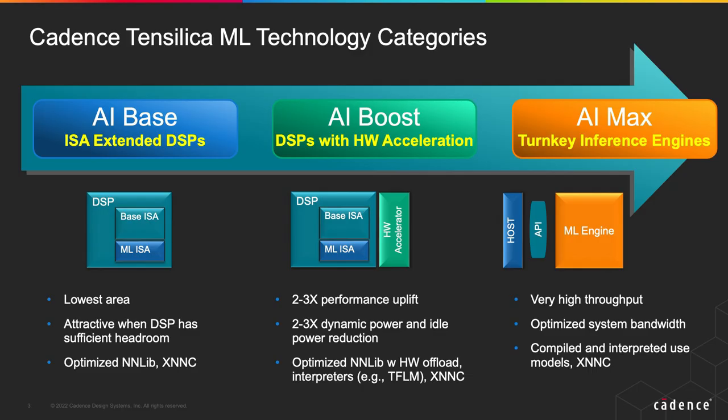For example, TFLM or XNNC compiled throughput. And then there are some customers who don't want to get their hands dirty — they just want an AI engine where they can dispatch a network and get the results. So we offer the AI Max family of products, controlled by a host processor through an API. These are much higher throughput products.